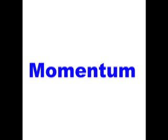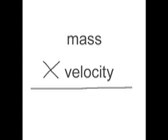Sir Isaac Newton also says that all moving objects have something called a quantity of force, otherwise known as momentum. Momentum is one of those things that you hear about a lot but don't know exactly what it means. Momentum is a characteristic of a moving object that is related to the mass and velocity of the object, and it can be determined by multiplying the object's mass and velocity.